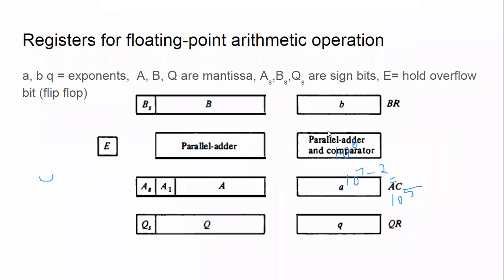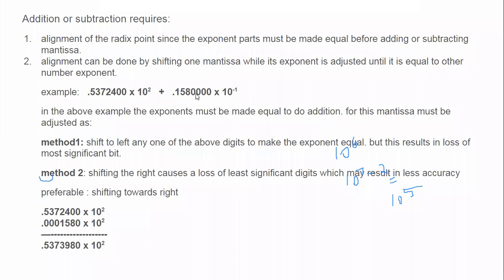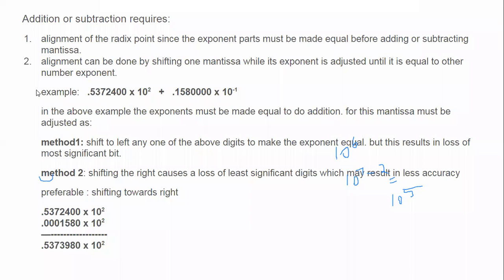For floating point addition and subtraction, you have to make both exponents the same. For example, if one number is 10^2 and another is 10^-1, you cannot add them directly. To add, you must make both exponents equal. There are two methods: shifting left loses the most significant bit, while shifting right causes loss of the least significant digits, which is preferable for accuracy.